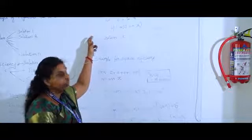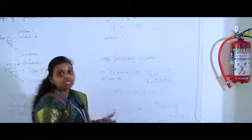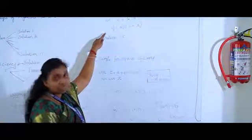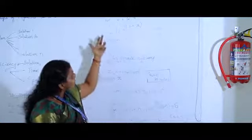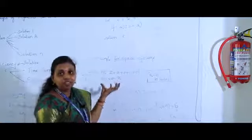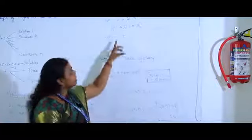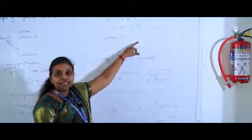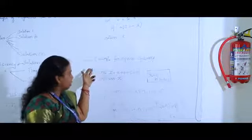Let us see an example for time complexity. I have chosen an algorithm for linear search. It gets the value of x, which is the search key, and in each iteration I have to search whether the value x exists in the array or not. The runtime depends on the number of loops, so we take the runtime as order of n.